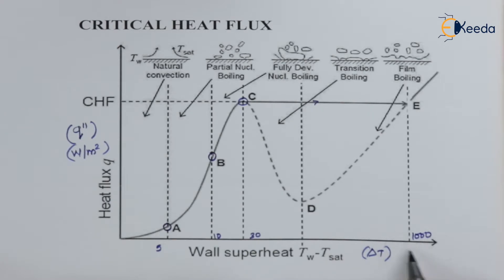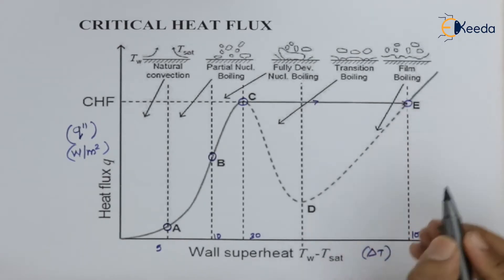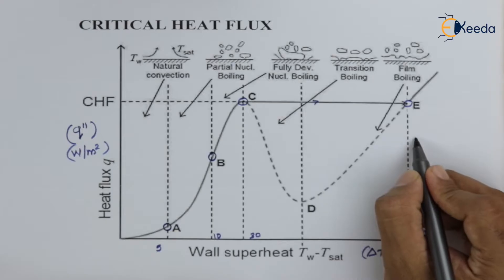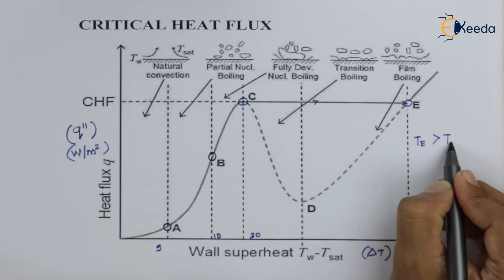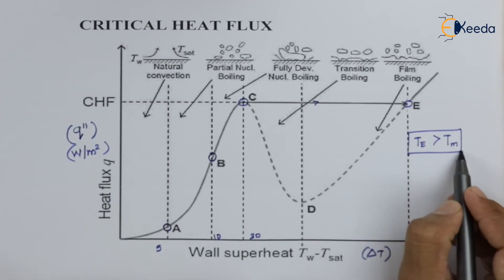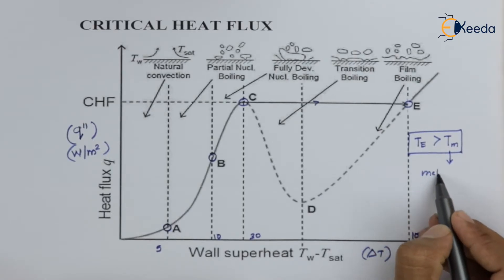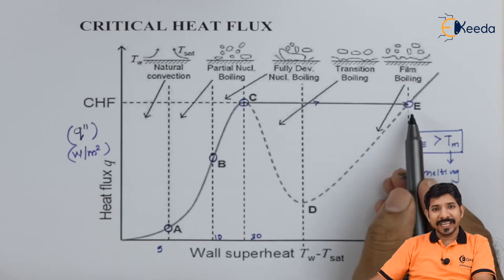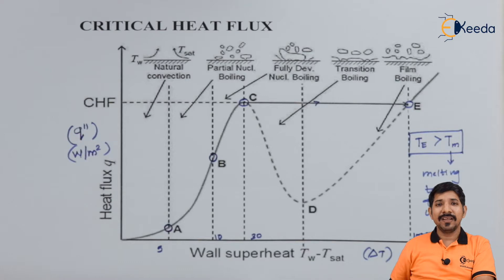This delta T can be, let us write down T_E, this can be higher than the melting temperature of the wire. This is my melting temperature of the wire. If we reach to this point, then there might be a possibility that melting may have taken place at a local point.